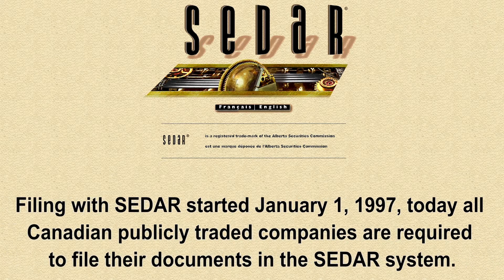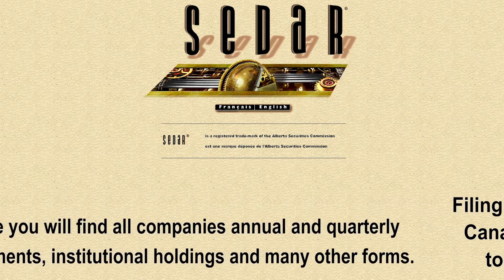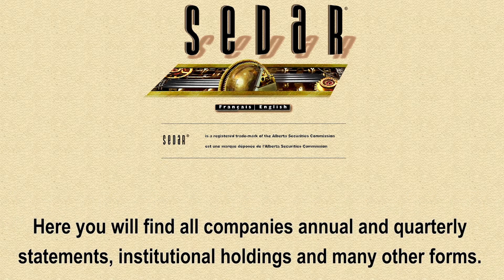Filing with CEDAR started on January 1st, 1997. Today, all Canadian public companies are required to file their documents into the CEDAR system. Here on CEDAR, what do you find? You find all companies' annual and quarterly statements, institutional holdings, and many other forms they have to file.